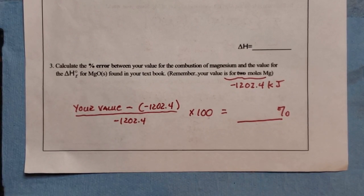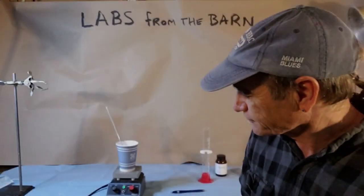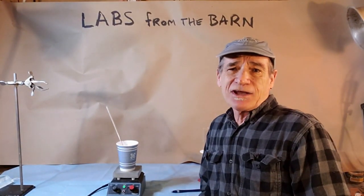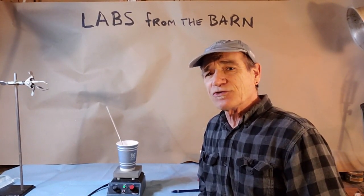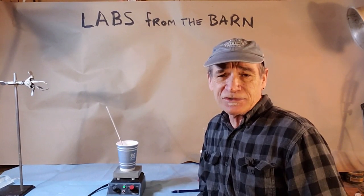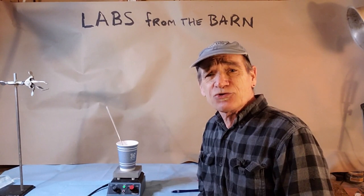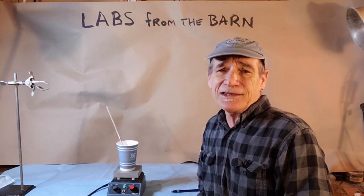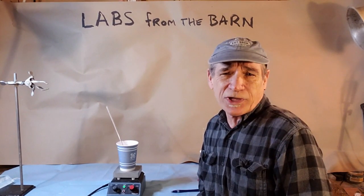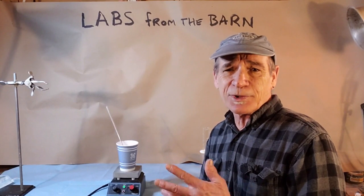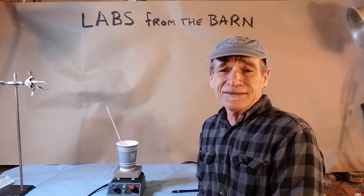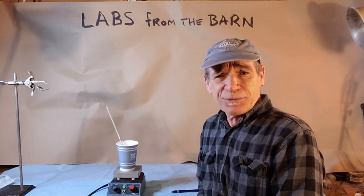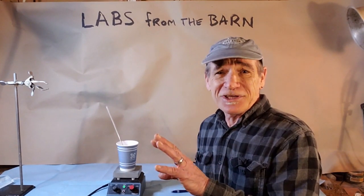That wraps up the report sheet. Make sure you have everything complete — don't forget your units. We've calculated heats of reaction for magnesium and magnesium oxide, and used Hess's law to find ΔH for the combustion of magnesium in oxygen. Make sure your report sheet and pre-lab are completely filled out, then either scan or photograph them and email to your lecture instructor — either me or Dr. Halverson. We've got more labs coming, so keep an eye on your email. Hopefully see you next week from Labs in the Barn.